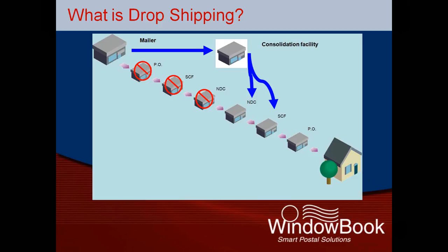Auxiliary Service Facility, or ASF. Sectional Center Facility, or SCF. Area Distribution Center, or ADC. And Destination Delivery Unit, or DDU. Bypassing these steps saves money for the Postal Service, which they share with mailers in the form of dropship and zone-skipping discounts.